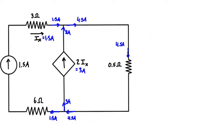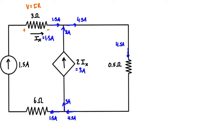Now let's look at the voltage drops across each resistor. For the first one, the current is going left to right, so by the passive sign convention the polarity has positive on the left and negative on the right. Applying Ohm's law, v equals iR, the voltage equals 1.5 amps times 3 ohms, giving a voltage drop of 4.5 volts.